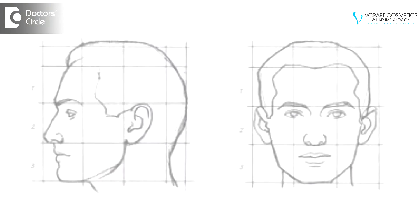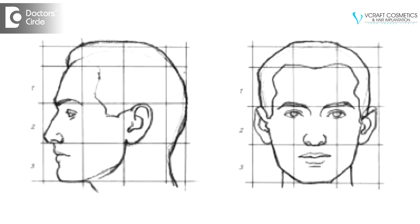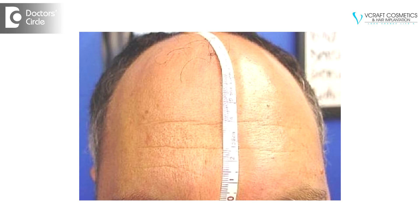To locate the ideal hairline in the bald patient, it is necessary to divide the face into three equal segments. In the midline, the hairline starts at least 8 cm from the glabella.